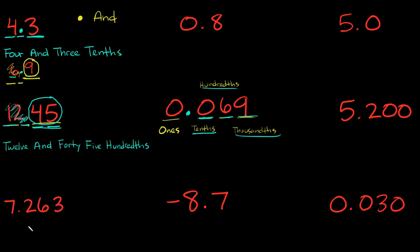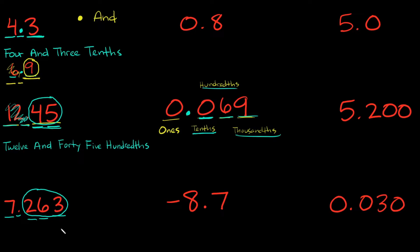Next we have 7.263. The proper way of reading this is 'seven and...' — ignoring that part, what number do I have here? That's 263. And what place value does it end in? Tenths, hundredths, thousandths. So I would read this as '263 thousandths,' because my number ends in the thousandths place. So the full reading is 'seven and two hundred sixty-three thousandths.'